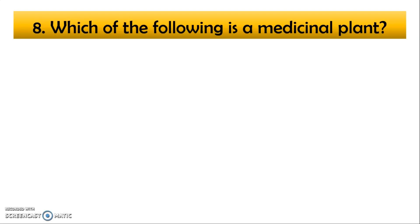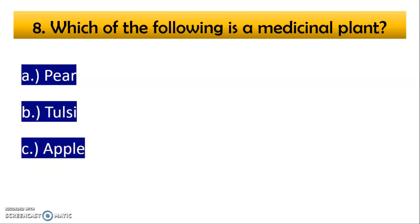Which of the following is a medicinal plant? A option pear, B option tulsi, C option apple and D option mango. Correct option is option number B, tulsi.